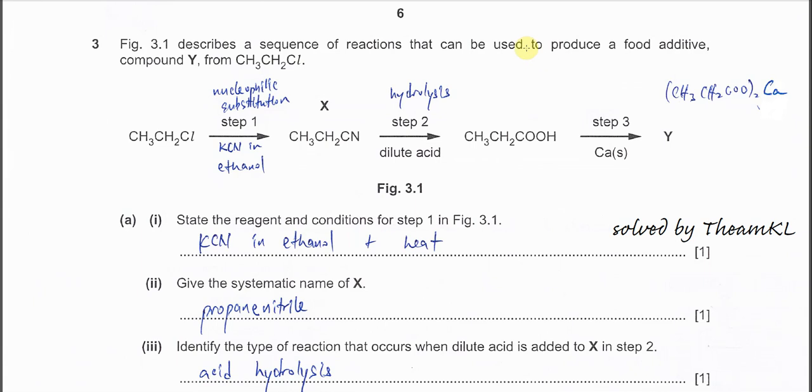Question 3. This is the three-step reaction to form Y from chloroethane. Step 1: the chloroethane is converted to this nitrile, propane nitrile. First we look at carbon number. From 2 carbon now is form 3 carbon.